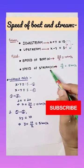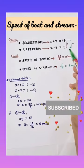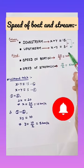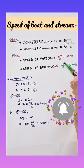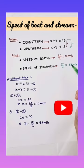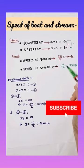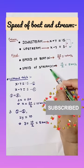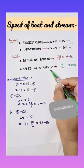For finding speed of stream we have to subtract these two speeds, so we get 10. Then dividing it by 2 we get 5 km per hour. This is the speed of stream or water.